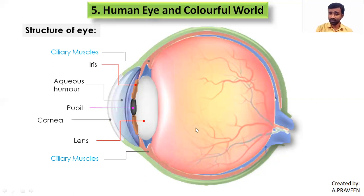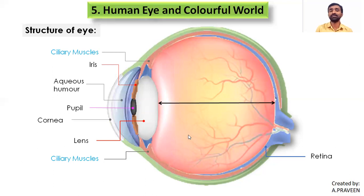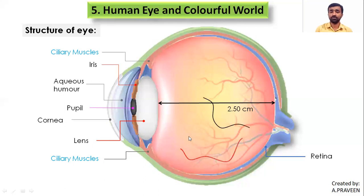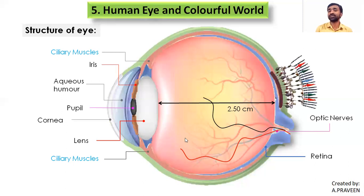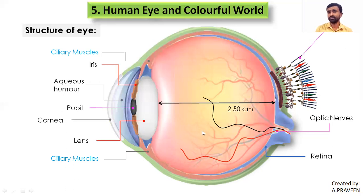The retina to lens distance is fixed at 2.50 centimeters and is the same for everybody. We have many nerves present in our eye called optic nerves, which are connected to the retina. These are called receptors, and they are of two types depending on their shape: rods and cones. Rods identify the intensity of light, and cones identify the color of light.